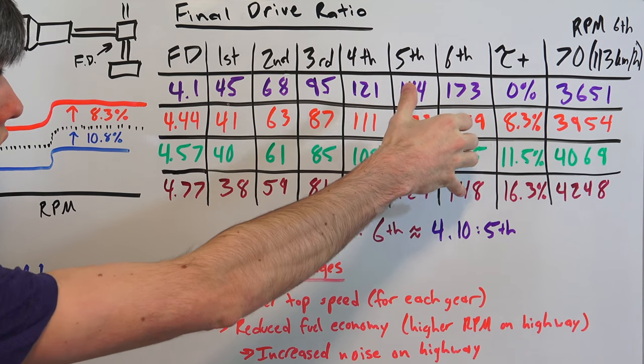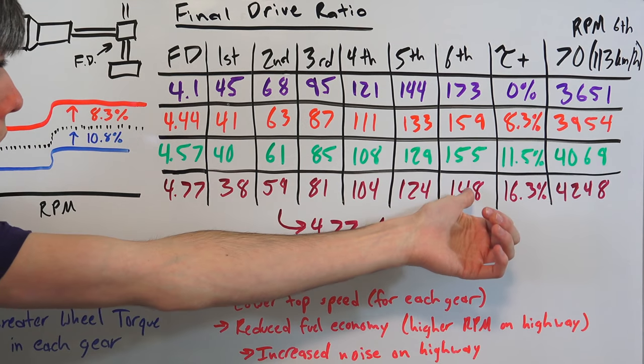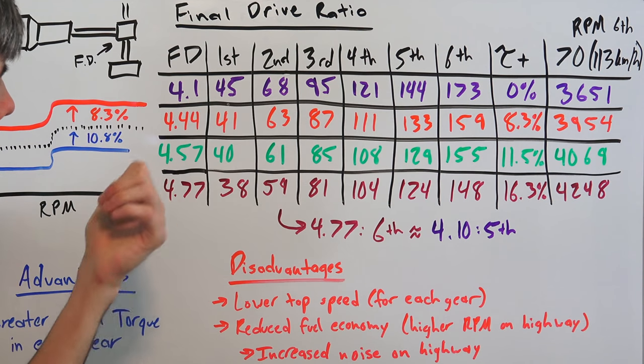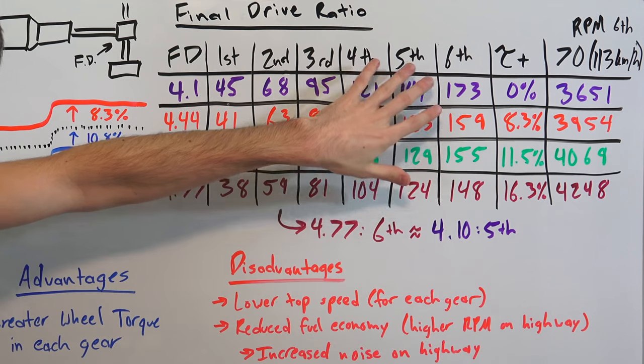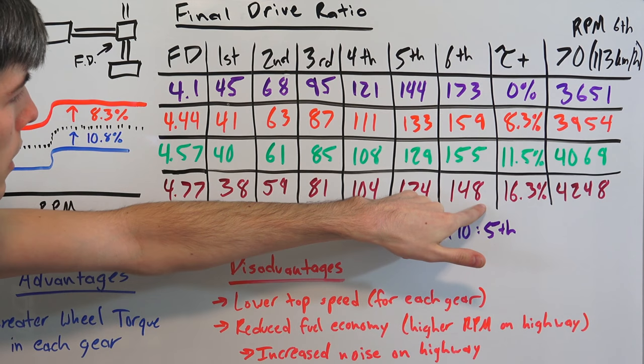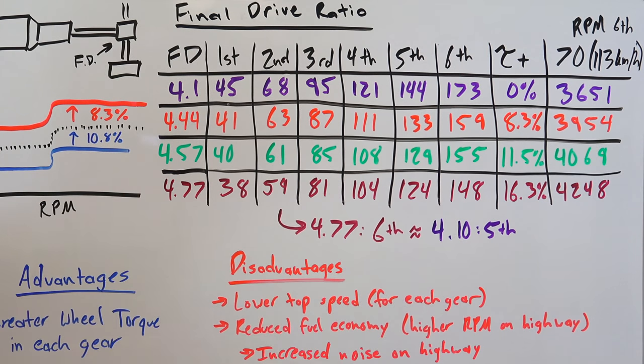So essentially in this case you've almost just eliminated a gear for no reason because you can use your lower gears in the stock setup and get the same solution, same wheel torque, rather than being in a higher gear here.